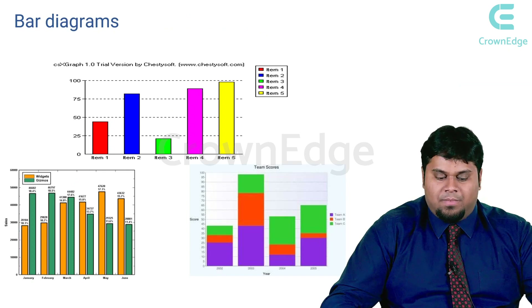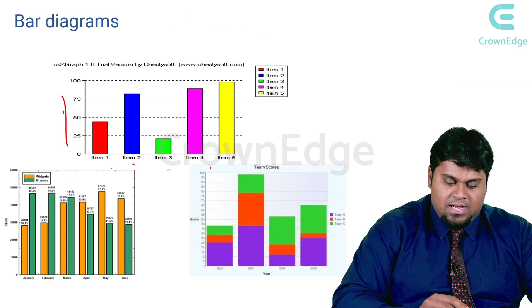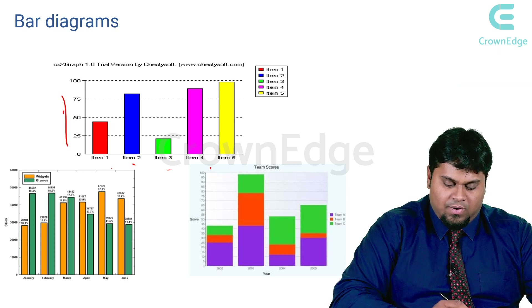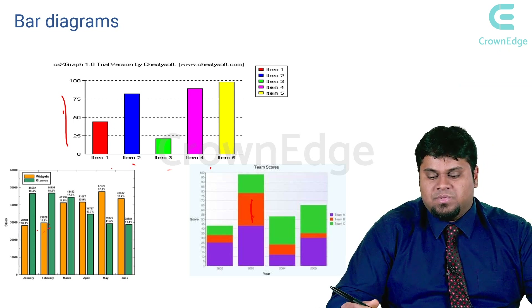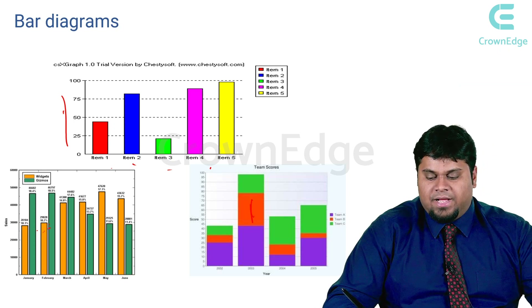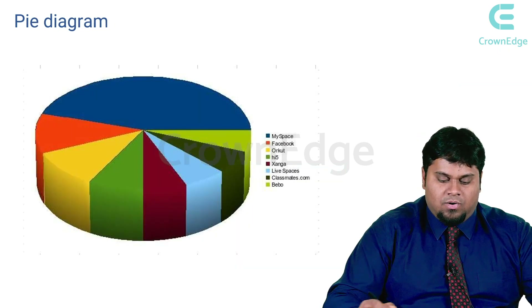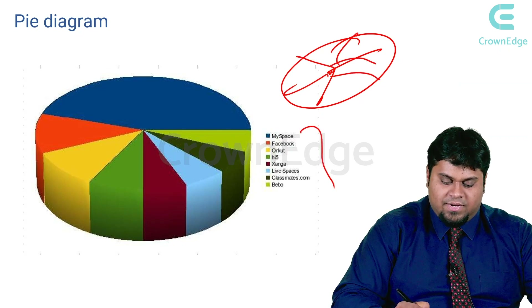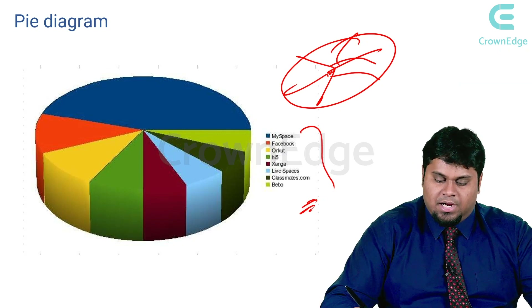Bar diagrams place various items against various frequencies with different color codings, and bars can be placed side by side or stacked within each other. There are various types of bar diagrams used for data representation in biomedical research. A pie diagram shows the components of a whole — for example, the preference for social media websites among a target population.